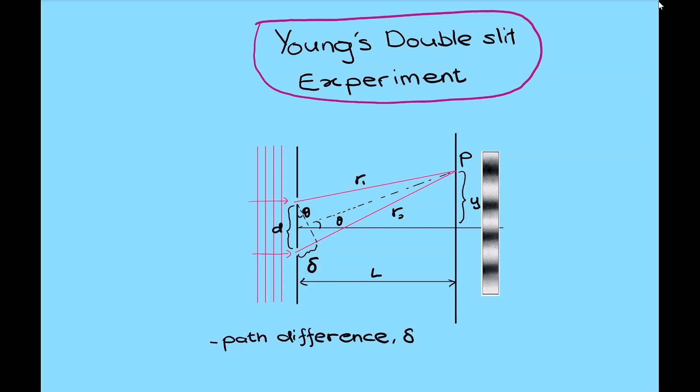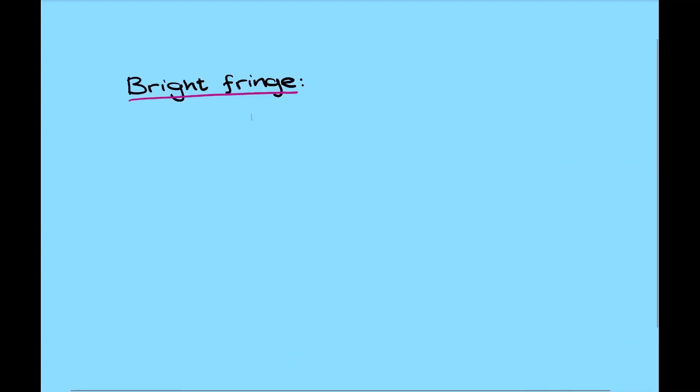The path difference delta is given by r2 minus r1 equal to d sin theta. The condition for bright fringe, maximum met with maximum, is given by d sin theta equal to m lambda, where m is valid for 0, plus minus 1, plus minus 2, and so on so forth.